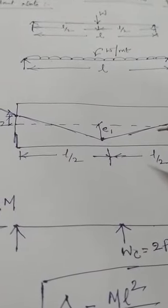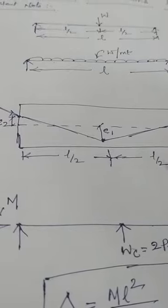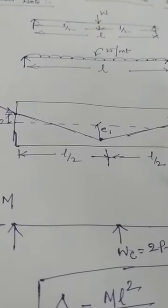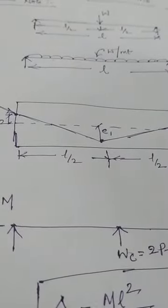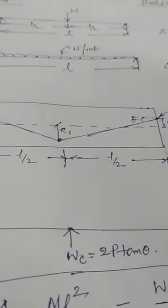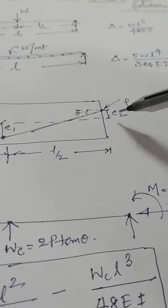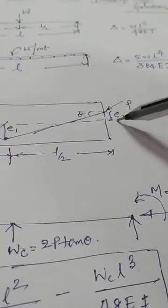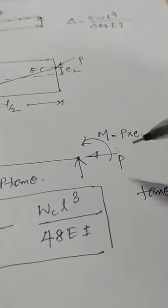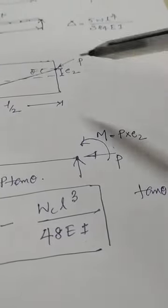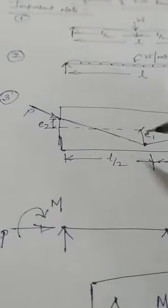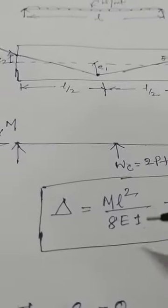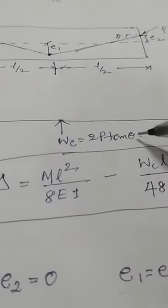The prestressing force will create a deflection, and there are different cable profiles. The first one is a triangular shape cable. This cable has eccentricity at the ends — the eccentricity at the ends is e2 — and because of this triangular shape of the cable, there is a creation of an upward point load that is 2P tan θ.